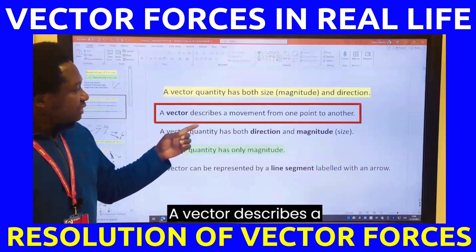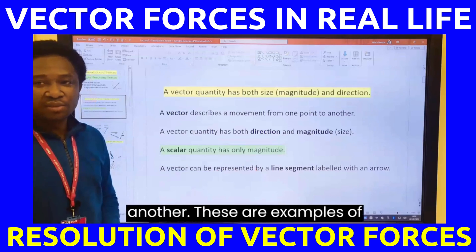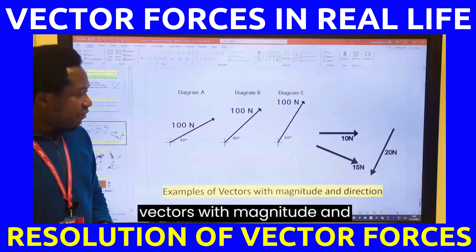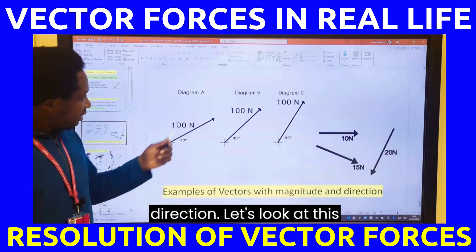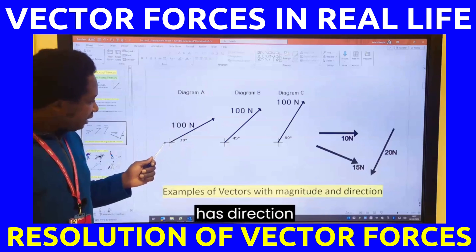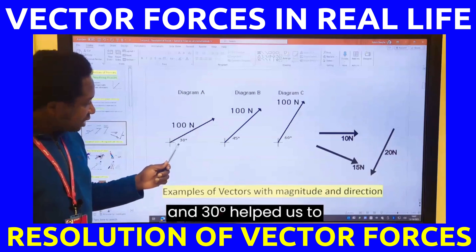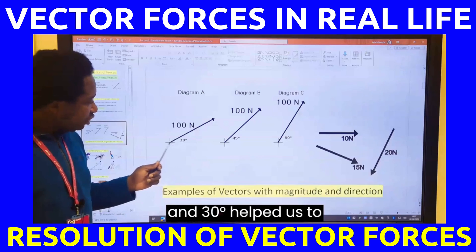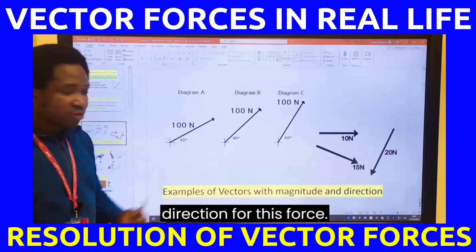A vector describes a movement from one point to another. These are examples of vectors with magnitude and direction. Let's look at this diagram. Diagram A has direction, and 30 degrees helps us to specify a precise direction for this force.